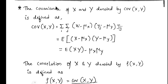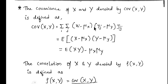Now we look into the definition of covariance. The covariance of x and y is denoted by COV(x, y) and it is defined as: COV(x, y) = summation over i and j of (xi minus mu_x) times (yj minus mu_y) times f(i,j). The simplified form can be written as E(xy) minus mu_x times mu_y.